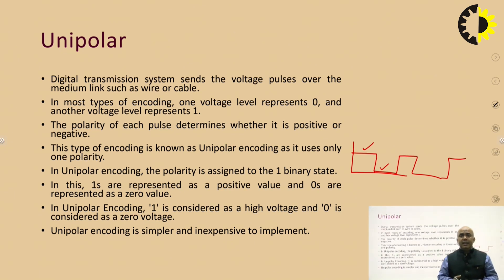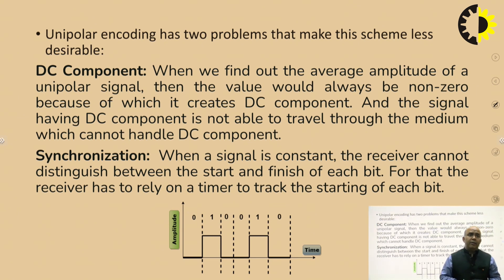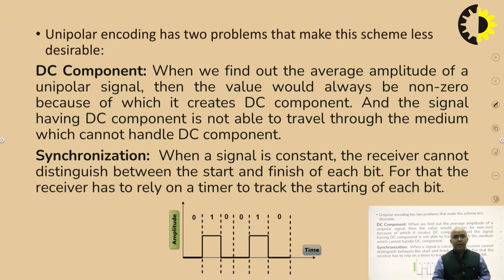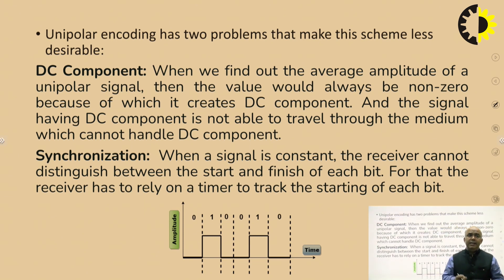However, there are certain issues with unipolar: DC components and synchronization issues. The first problem is DC components. When we find out the average amplitude of a unipolar signal, the value would always be non-zero, because of which DC components are generated. If any medium cannot handle DC components, signals transmitted through that medium will have problems handling those DC components.